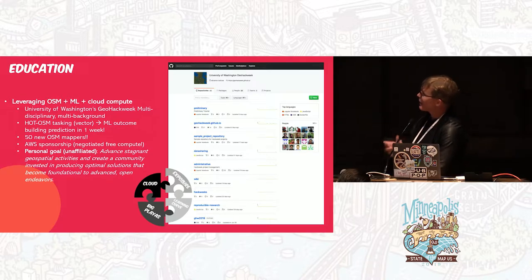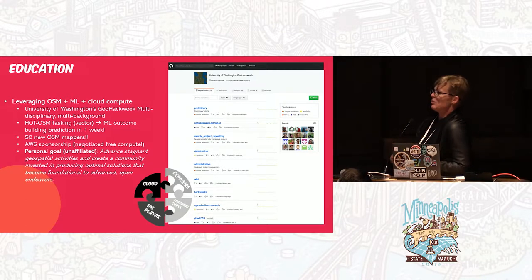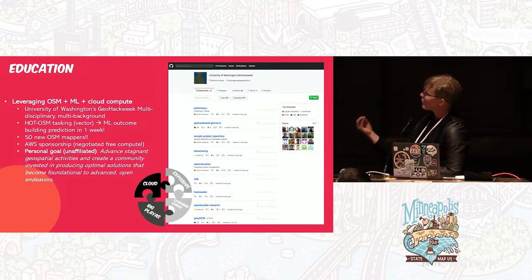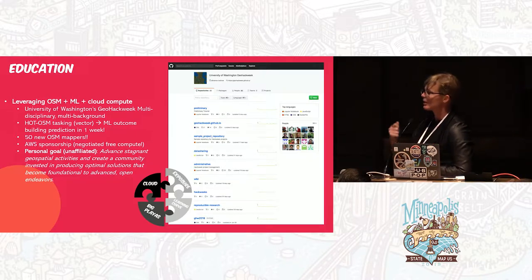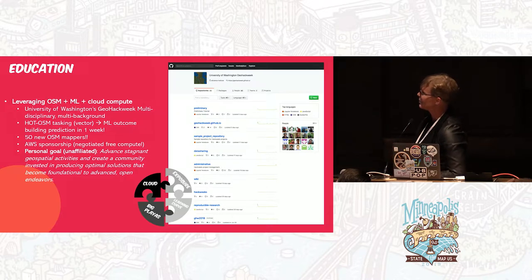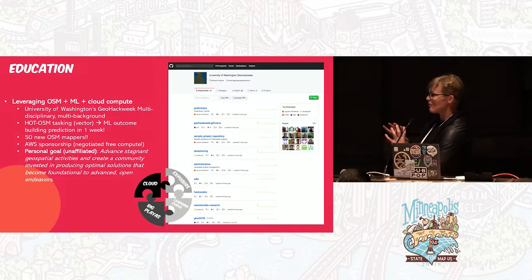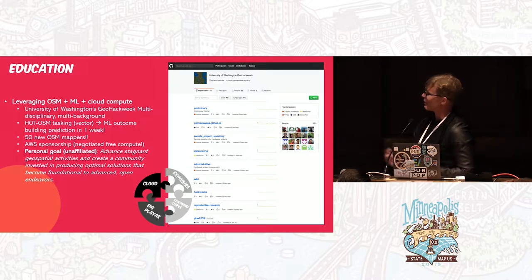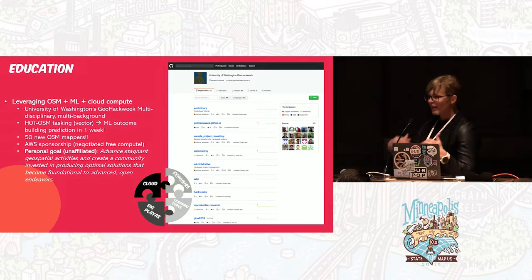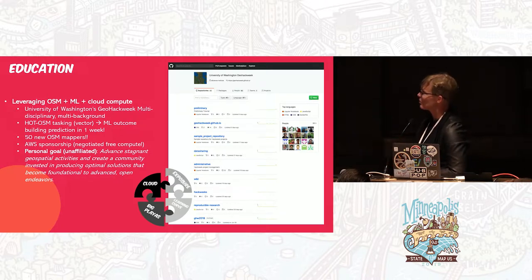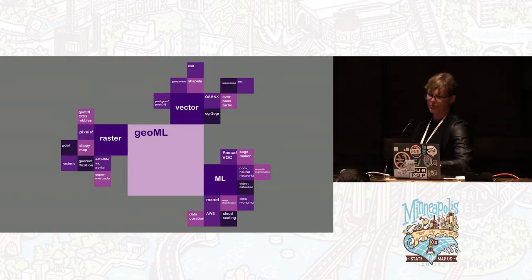More specifically, this year's curriculum leverages OSM to create machine learning models and provides insight into what being a geospatial data scientist is. These 50 new students will become OSM mappers on day one. We're bringing in a volunteer from the Missing Maps program in Seattle to help get students up and running. I was also able to negotiate with AWS for free cloud compute using Amazon SageMaker to help bridge the gap on model creation.